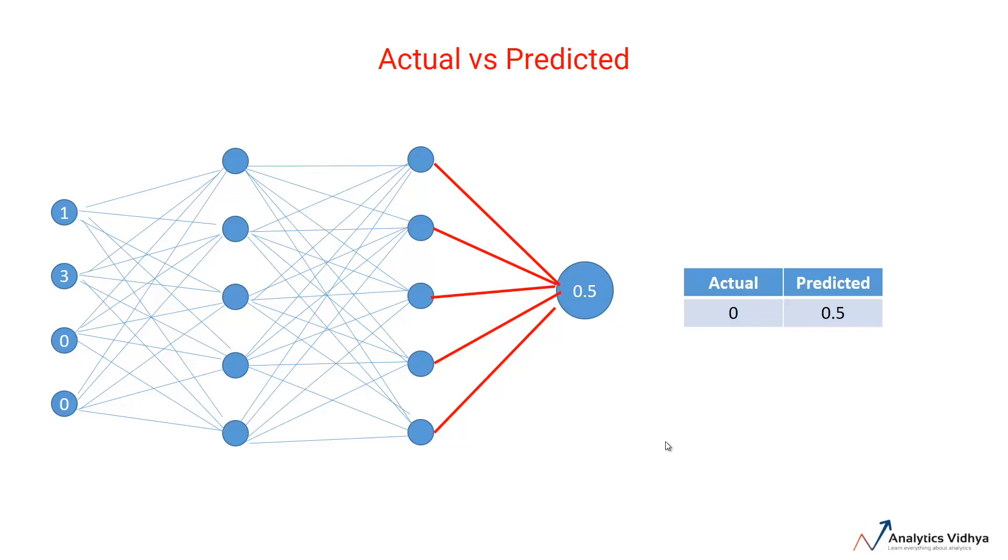Now, if you notice carefully, we calculated the hidden activations for each of the neurons sequentially, that is one neuron after the other. In fact, one optimization that we can make to the calculation is to calculate them in parallel. Since calculation of neurons is independent of each other, they can be computed in parallel easily.